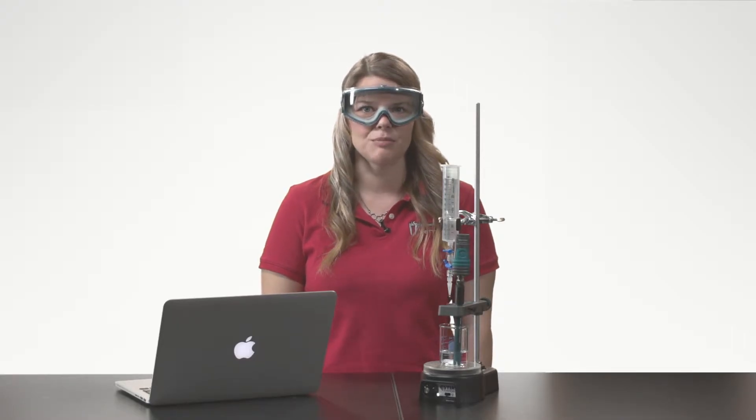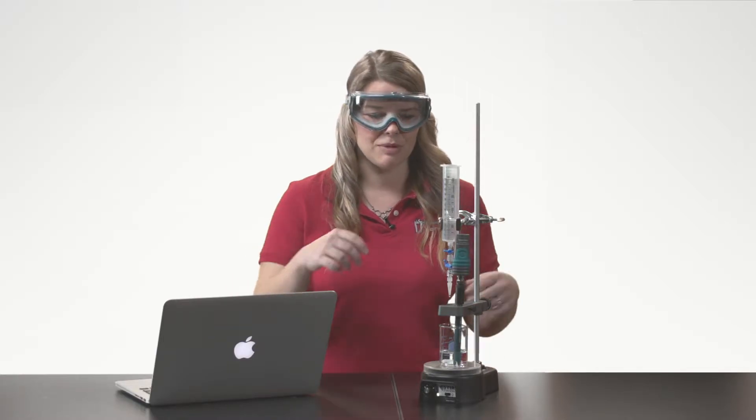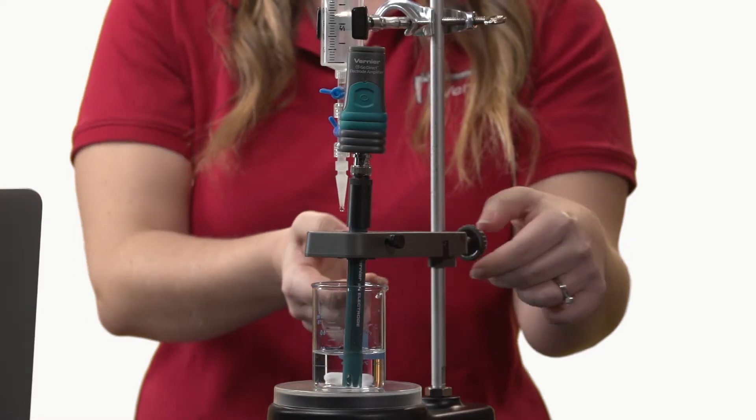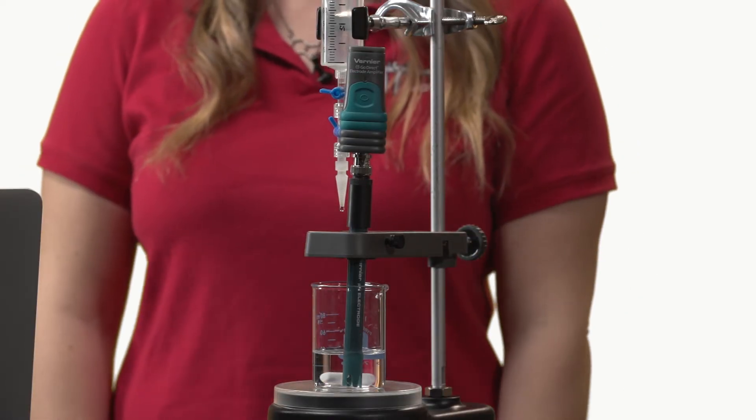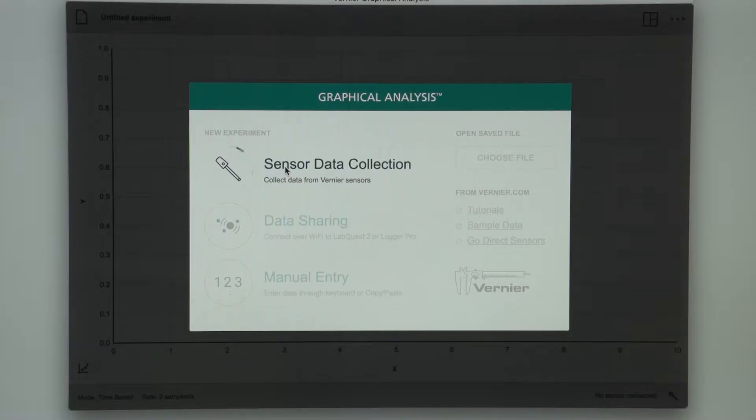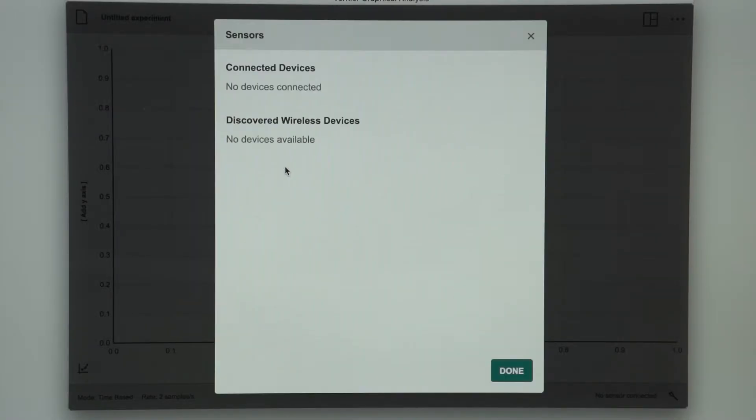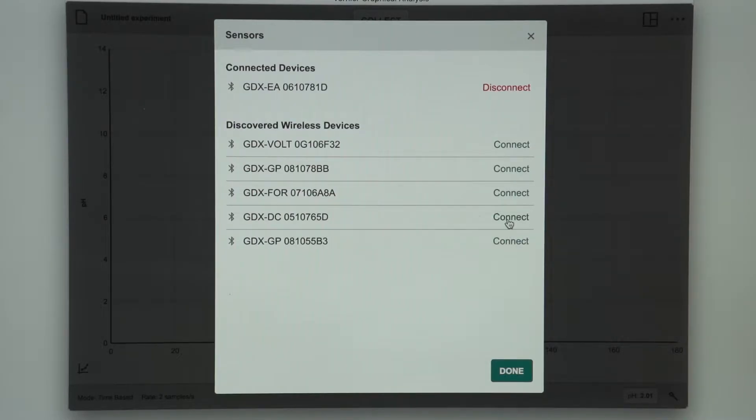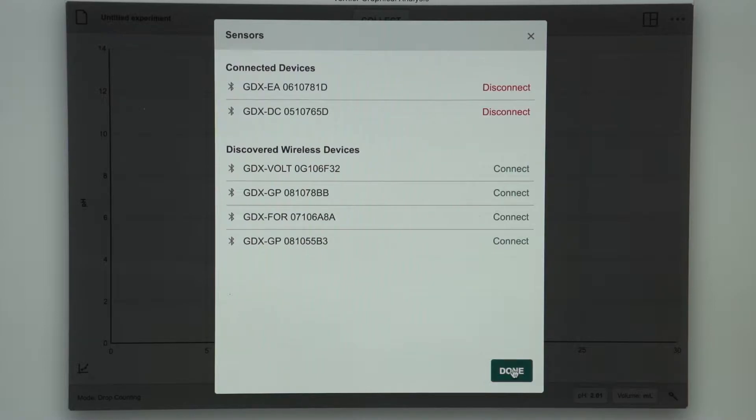Since I will be taking data via Bluetooth, I will now turn on my pH probe and drop counter. I'll then launch the GA4 app and select sensor data collection. I'll then connect to my pH probe and to my drop counter. Select done.